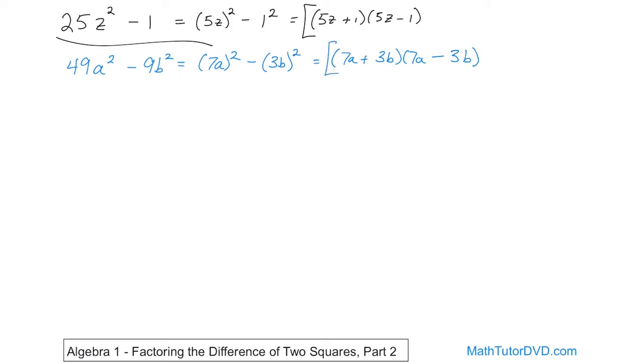I encourage you to cross-multiply all of that out and double-check, and what you're going to get is exactly what you started with. This is what we call the factored form using the difference of two squares.